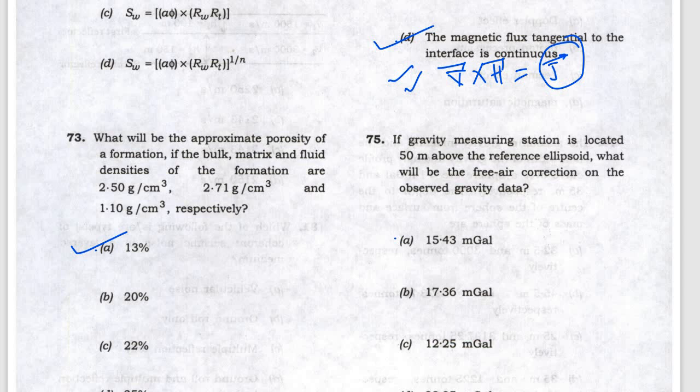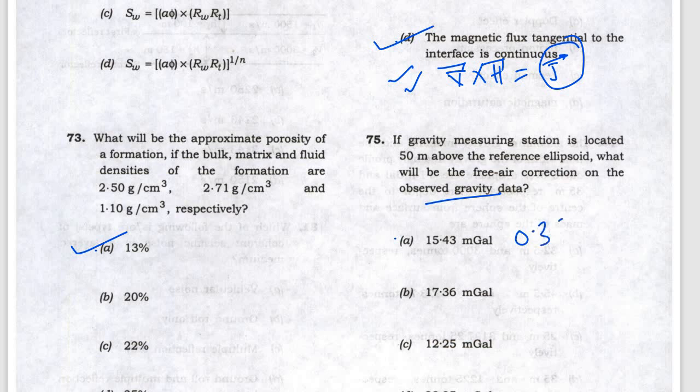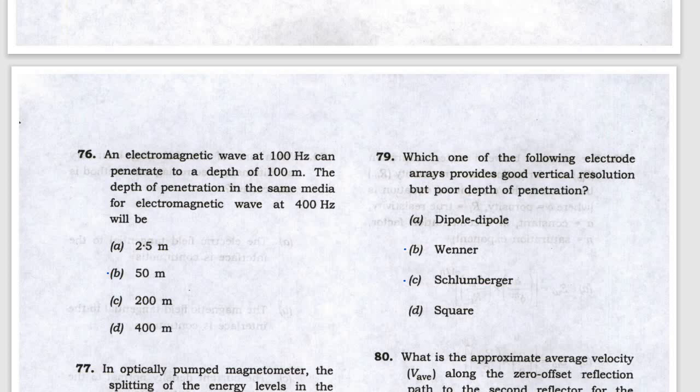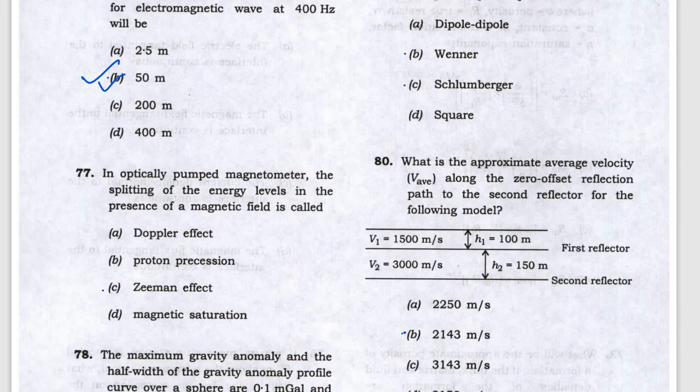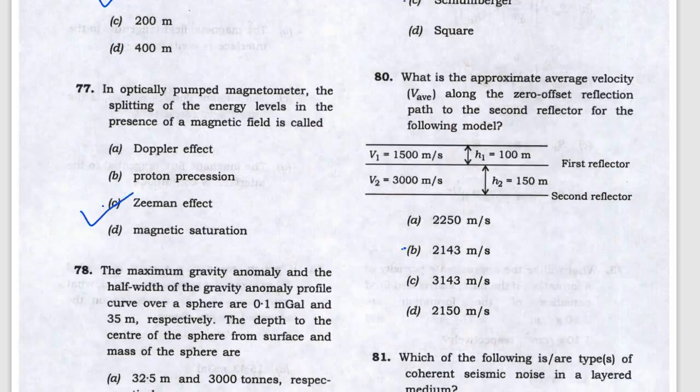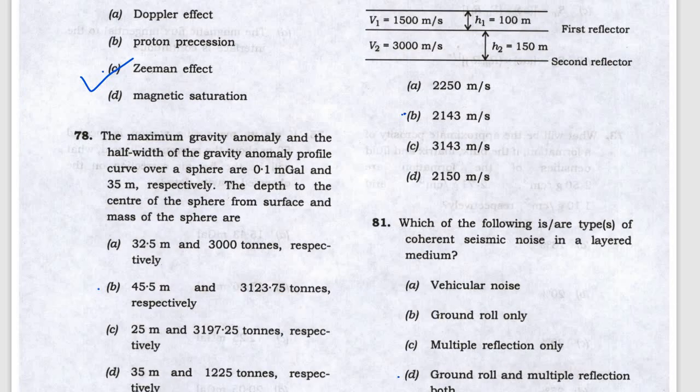For the gravity anomaly free air correction, it's 0.308 times 50, which gives answer A. The electromagnetic wave answer is 50 meters. The optically pumped magnetometer uses the Zeeman effect, and the gravity anomaly problem answer is B.